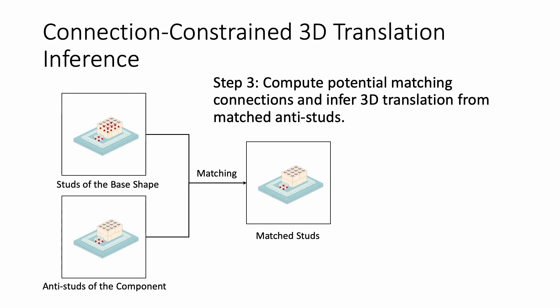Then we match studs and anti-studs on the manual plane by 2D Euclidean distance and get a set of matched studs from the base shape, which we know the 3D positions. We assign these 3D positions to the anti-studs of the component and use them to vote for the 3D translation of the component. In this way, combining the rotation prediction from the first stage, we can infer the 3D pose of every new component in this step.